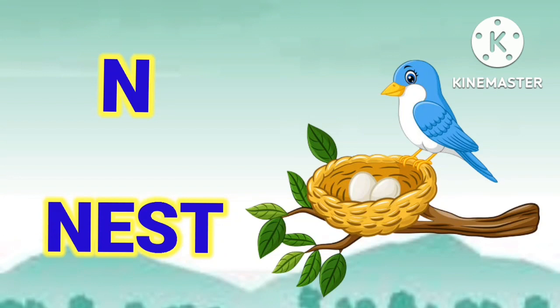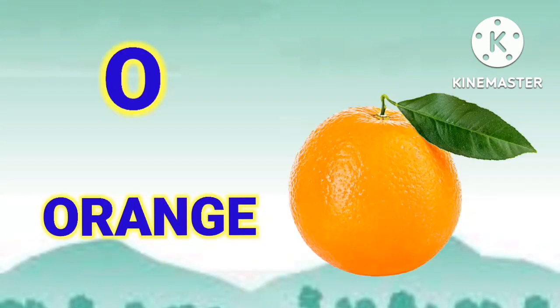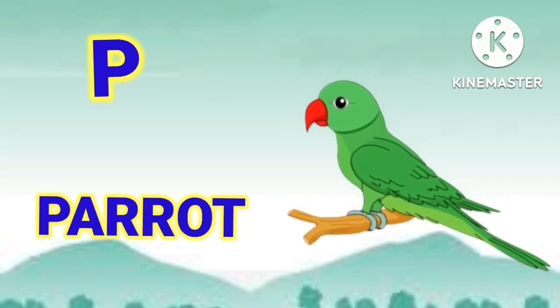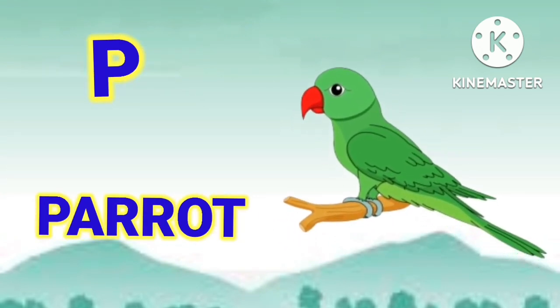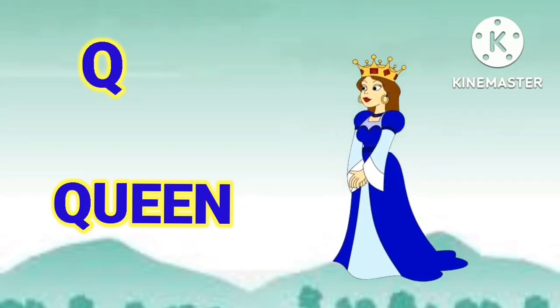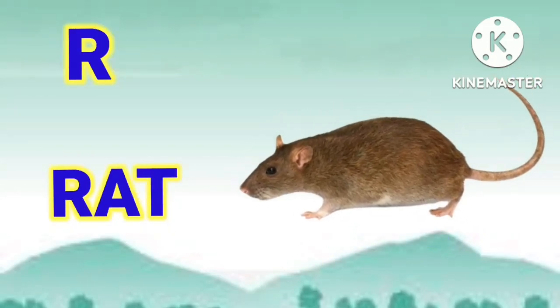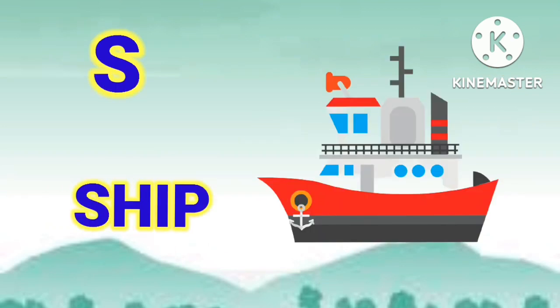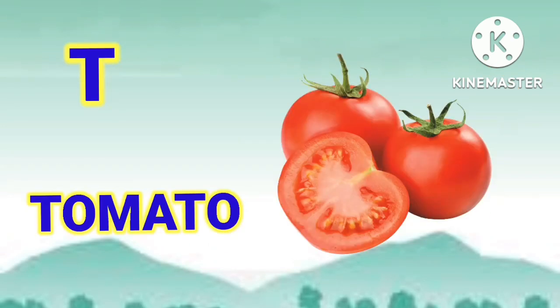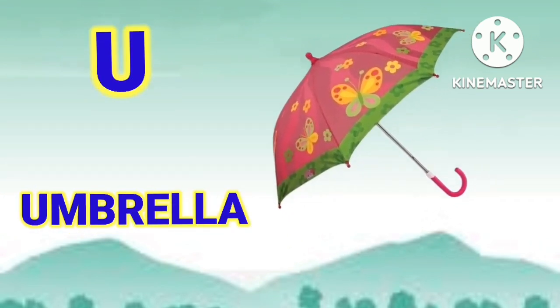N for Nest, O for Orange, P for Parrot, Q for Queen, R for Rat, S for Ship, T for Tomato, U for Umbrella.